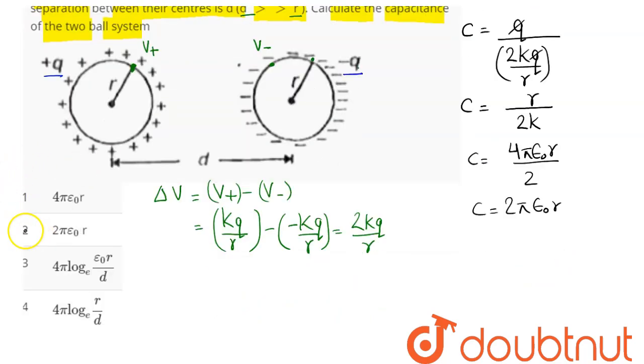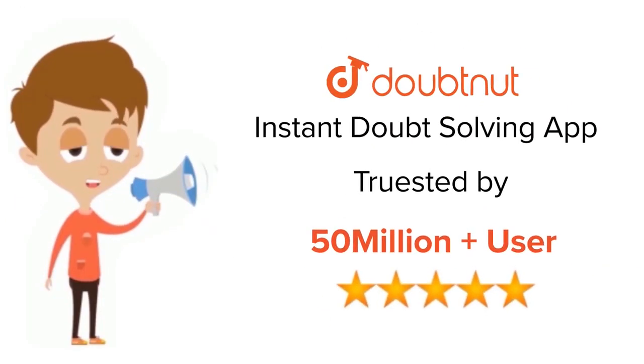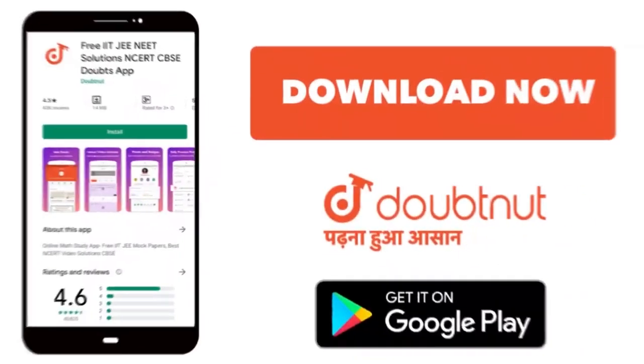Amongst the four options we can see here option number 2 is the correct answer. So 2 is our answer. For class 6 to 12, IIT-JEE and NEET level, trusted by more than 5 crore students. Download Doubtnet app today.